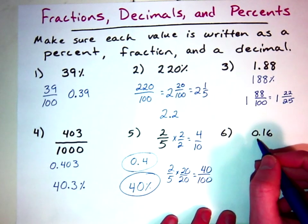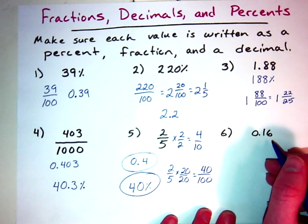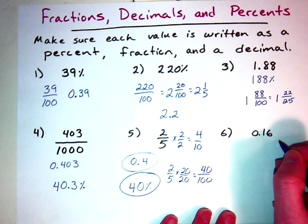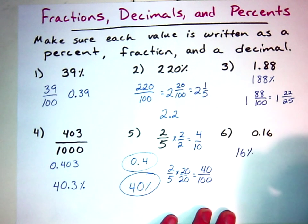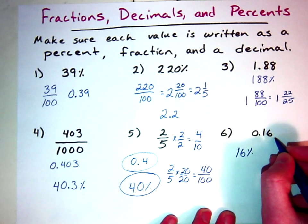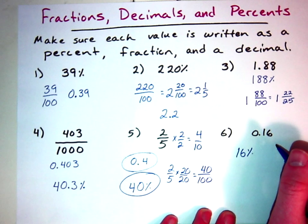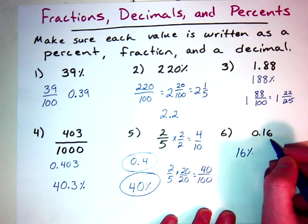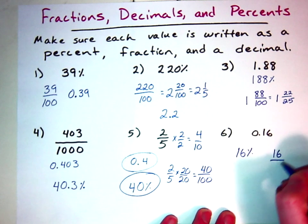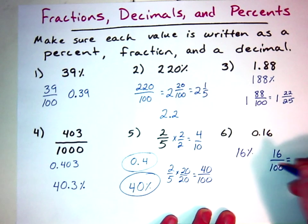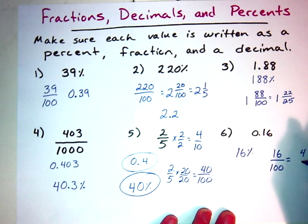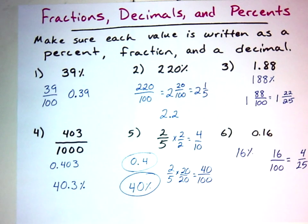Number 6: I've got 0.16, and I need it as a fraction and a percentage. Percentage is easy — two spots to the right gives 16%. For the fraction: the last decimal place value is in the hundredths, so it's 16 over 100. Does that simplify? Yes, by 4. 16 divided by 4 is 4, and 100 divided by 4 is 25, giving us 4 twenty-fifths. So those are some examples of how you can convert fractions, decimals, and percents into different forms.